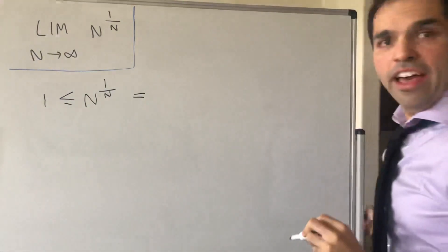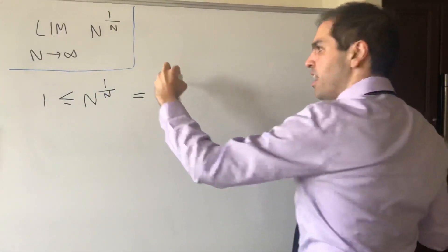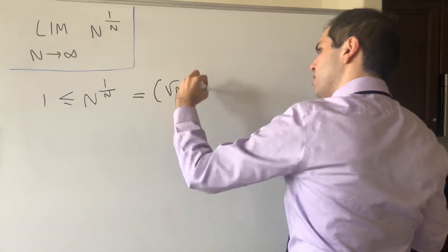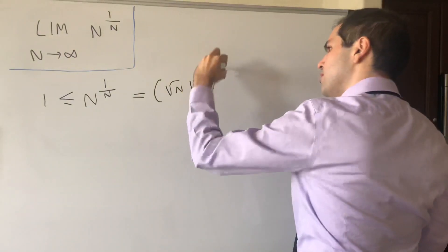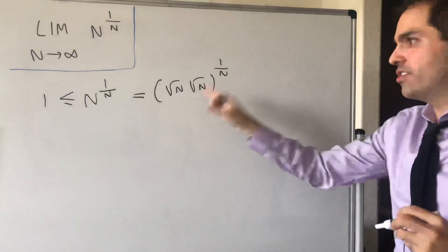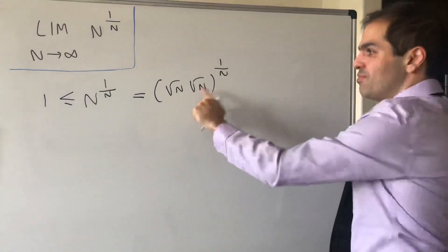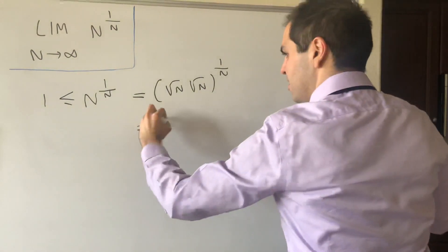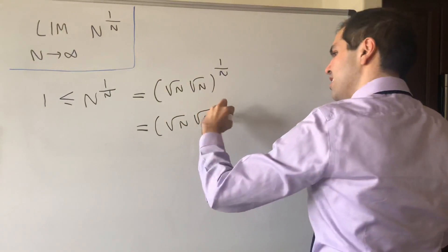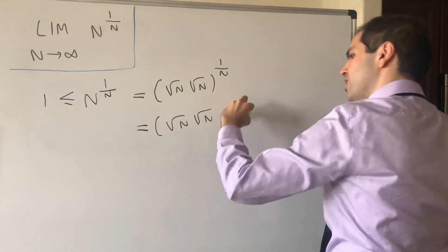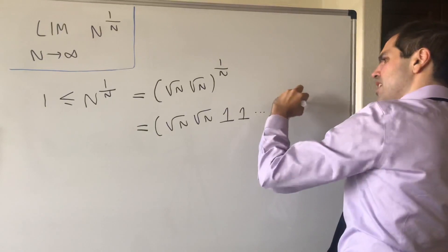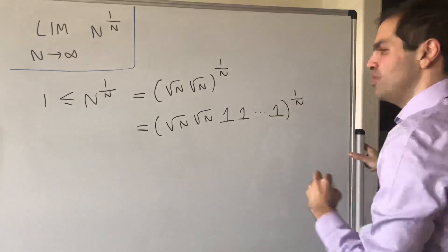On the other hand, write n as square root of n times square root of n. Then we want to take the nth root of this, and even further, write this product as square root of n times square root of n times 1 times 1 times 1 times 1, with n minus 2 ones.